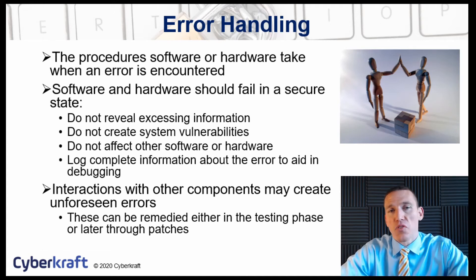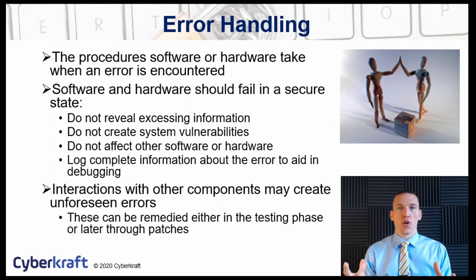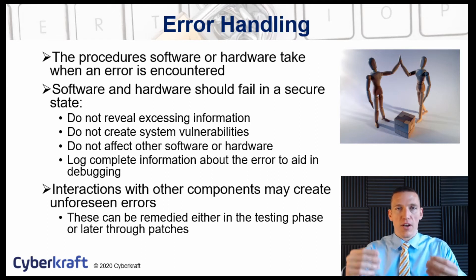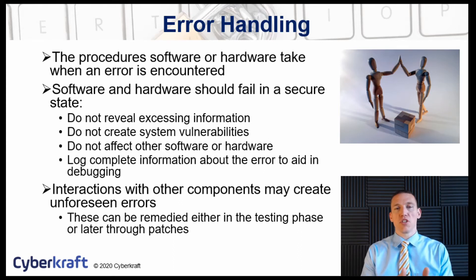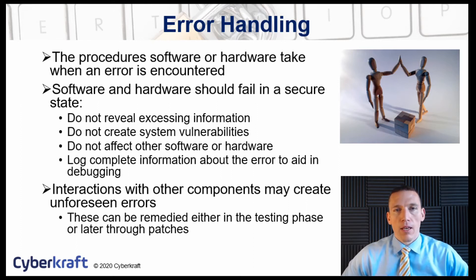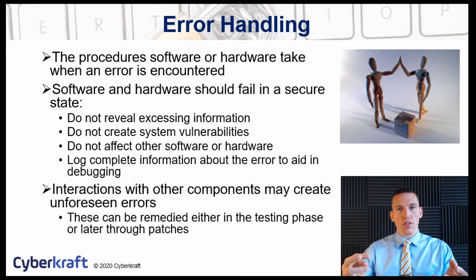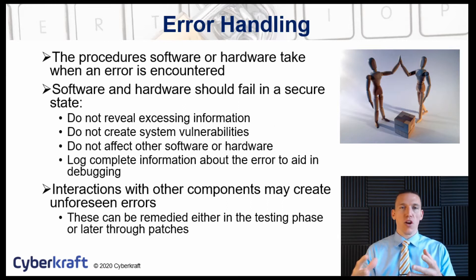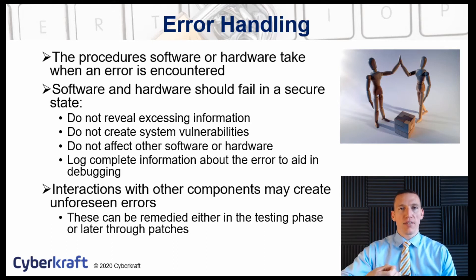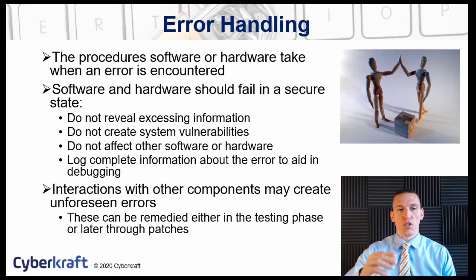This will prevent attackers from causing errors and reading information such as the version of the operating system or software to conduct reconnaissance. Errors should not create additional vulnerabilities — if one software fails, it should not create vulnerabilities for the entire operating system or additional attack vectors. It should also not affect other software on the device. Sometimes interactions between different components, while isolated they may operate fine, but when combined they could create errors for one another. This is why you need a good change management process with testing in a testing environment and a staging environment that simulates the actual production environment.